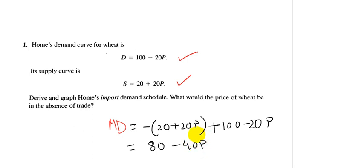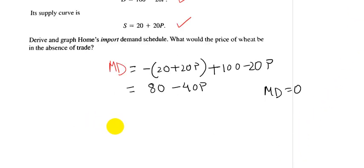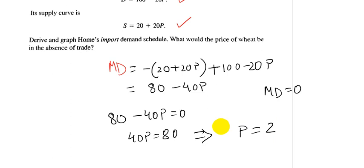Now without trade, the domestic prices and quantities adjust such that the import demand is zero. Thus, 80 minus 40P equals zero, or 40P equals 80. Upon solution, the price comes to 2. That is, in the absence of trade, the quantities and price adjust such that the import demand is zero.